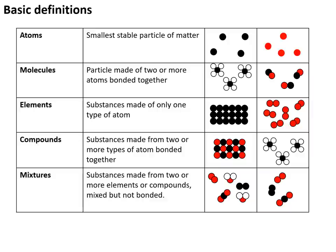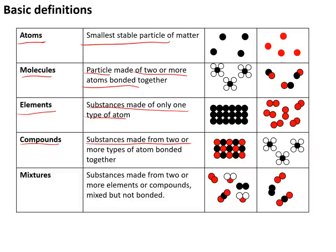In terms of basic definitions, atoms are the smallest stable particle of matter. Molecules are particles made of two or more atoms bonded together. Elements are substances made from only one type of atom. Compounds are substances made of two or more types of atom bonded together, and mixtures are made from two or more different substances, elements or compounds that are mixed together but not bonded.